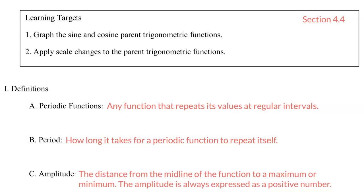Here in section 4.4, we're going to learn how to graph by hand the sine and the cosine function. A periodic function is a function that repeats its y values at regular intervals. If you remember back to when we learned the unit circle in sections 4.1 through 4.3, sine and cosine repeated the same values over and over. A period is how long it takes for a periodic function to repeat itself, or the length of one cycle.